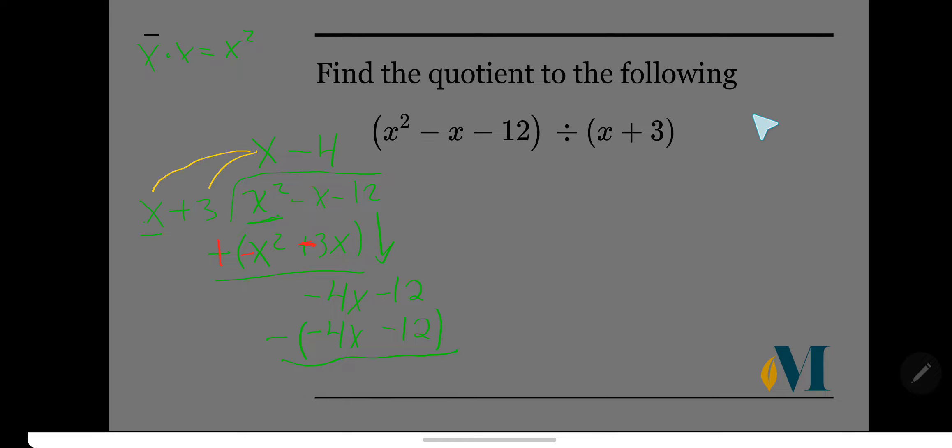So let's go ahead and do our subtraction here. But I like to turn this into an addition problem because adding is so much more pleasing to me than subtraction. So I changed my operation sign to addition and I changed the signs of everything in parentheses. So now I have negative 12 plus positive 12, which is zero. And I have negative 4x plus 4x. Those cancel out. That's zero. So there we go. Our quotient is x minus 4.